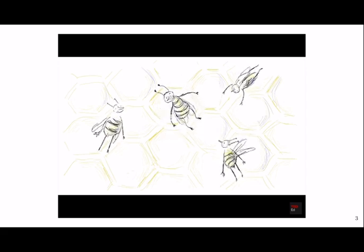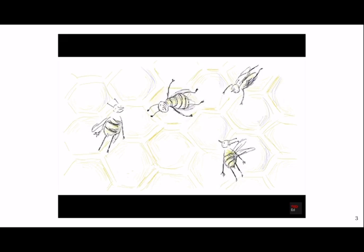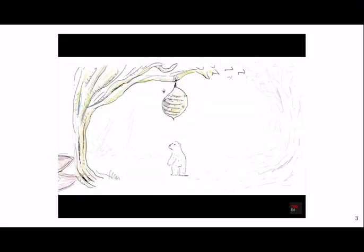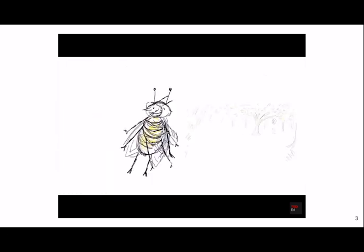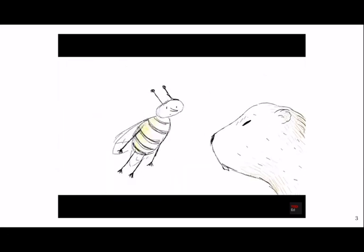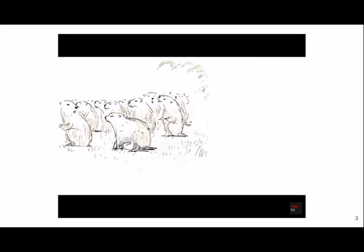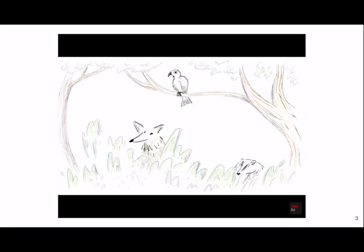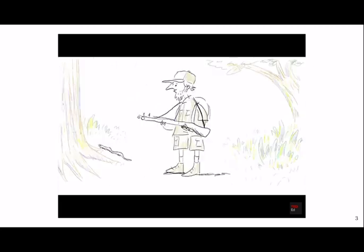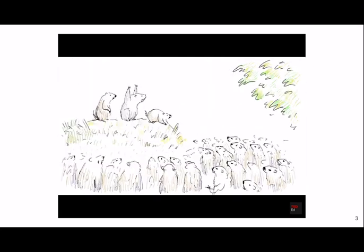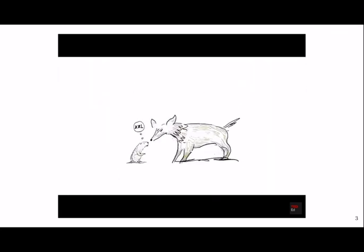Bees use the moves, angle, duration, and intensity of their waggle dance to describe the location and richness of a food source outside the hive, so they exhibit the property of displacement. They share that language trait with prairie dogs, which live in towns of thousands and are hunted by coyotes, hawks, badgers, snakes, and humans. Their alarm calls indicate the predator's size, shape, speed — and even, for human predators, what the person is wearing and if they're carrying a gun.